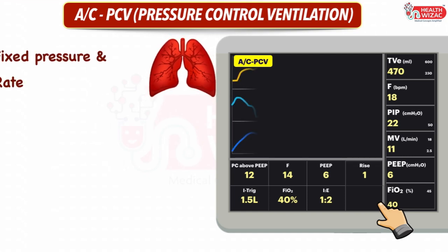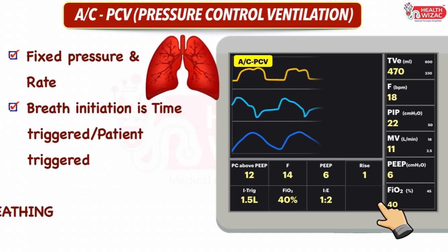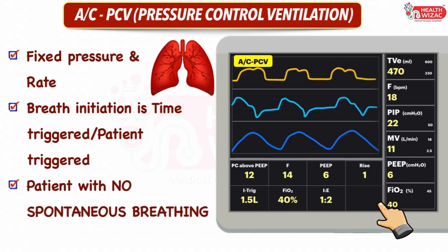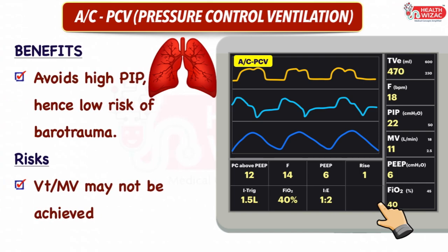In this mode, the ventilator delivers breath at a set pressure and set rate. Breath initiation is time-triggered in control mode and patient-triggered in assist mode. It should be used when the patient has no spontaneous breathing or should be sedated and paralyzed. Advantages include avoiding high peak inspiratory pressure, hence lowering the risk of barotrauma, whereas disadvantages include non-delivery of set tidal volume and minute ventilation.